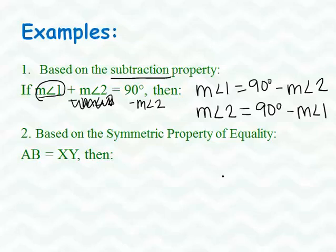Number 2, it says based on the symmetric property of equality, AB is equal to XY. Well, then, all the symmetric property is doing is flipping them, making it be XY is equal to AB. Again, most of these properties are fairly simple, but I suggest writing down the common ones and little notes with them so that way you can keep them handy for all quizzes and tests.